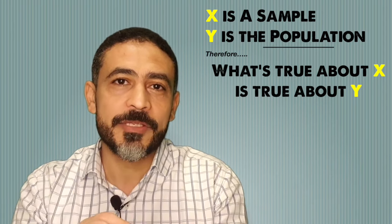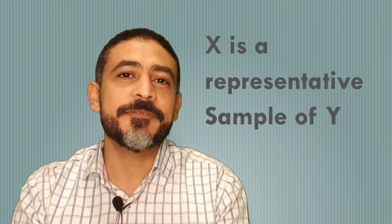The conclusion in a statistical argument states that what is true about the sample is true about the population. The key assumption the author makes is that X is a representative sample of Y, because without this he couldn't conclude that what is true for X is true for Y.